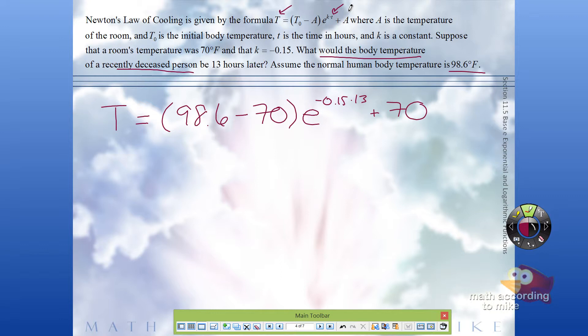All right, so when you put this in your calculator, make sure your exponents are always in parentheses. Otherwise in this case you'll have only raised it to the negative 0.15 and then multiply the entire thing by 13, and that's not what we want to do.